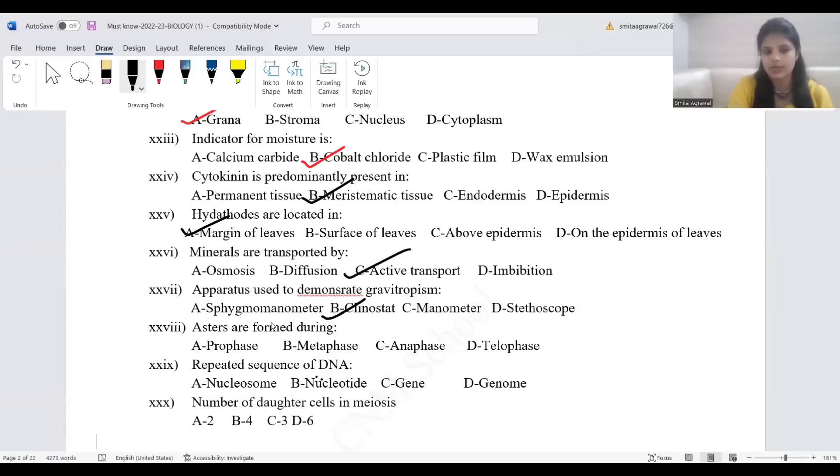Sphygmomanometer is for blood pressure. Manometer is for normal atmospheric pressure. Stethoscope is for heartbeat.